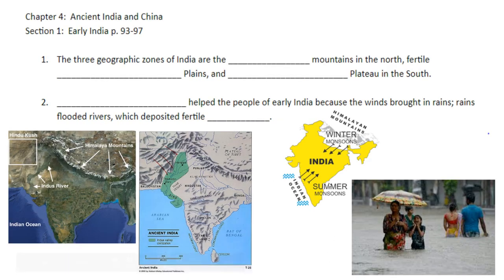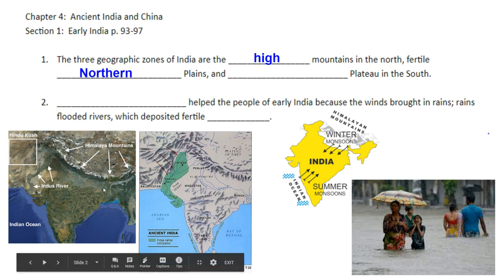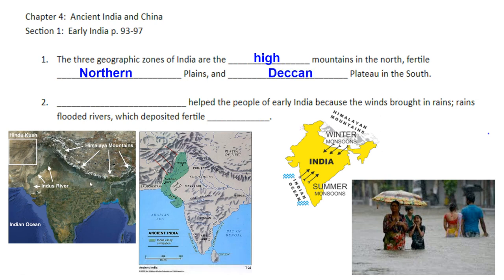Number one, the three geographic zones of India are the high mountains in the north, which would be your Himalayas; the fertile northern plains, which is that area just south of the Himalayas; and in the way south, the Deccan Plateau.